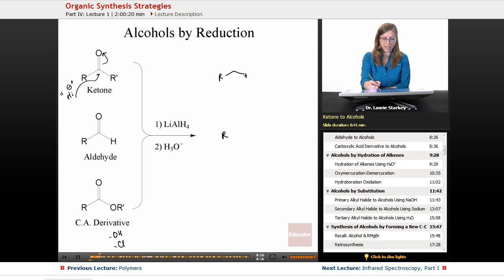So let's look at the ketone case. That would give us a secondary alcohol, because this carbon bearing the OH has two carbon groups on it. If we started with an aldehyde, that would give us a primary alcohol, because there's only one carbon group attached to the carbon.